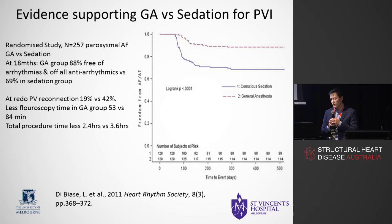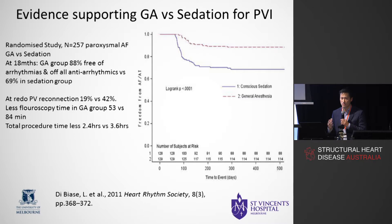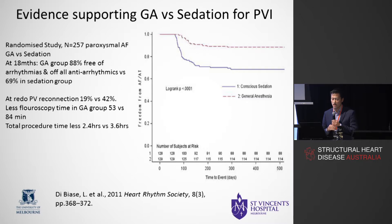We perform this under general anaesthesia, and amongst cardiac and EP anaesthetists I've spoken to, GA is what's asked for and what we provide, though there is variation. Some studies show people doing it under sedation, but GA is preferred because it offers better control and better results. At 18 months, the GA group had 88% free of arrhythmias compared to 69% in the sedation group, related to better surgical conditions. At redo procedures, cases done under sedation had high rates of pulmonary vein reconnection, indicating incomplete isolation at the time. Procedurally, GAs were actually quicker as well.